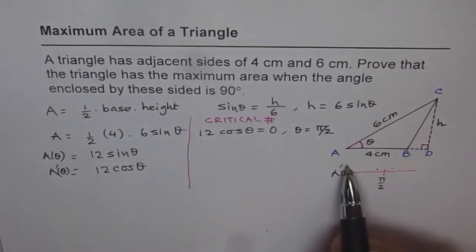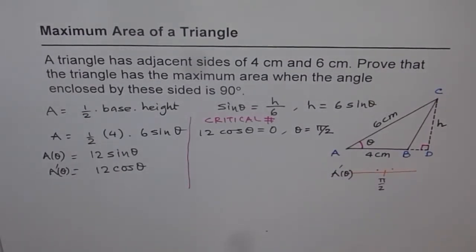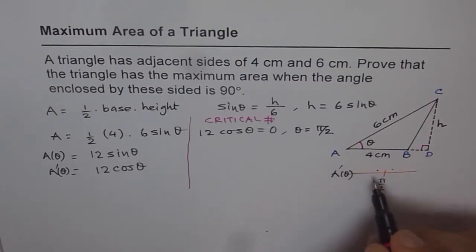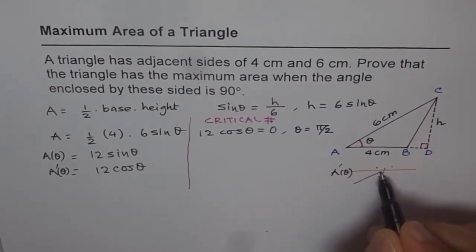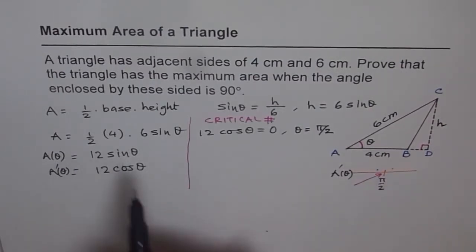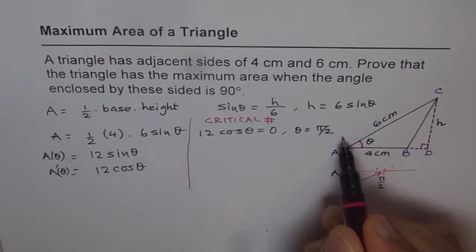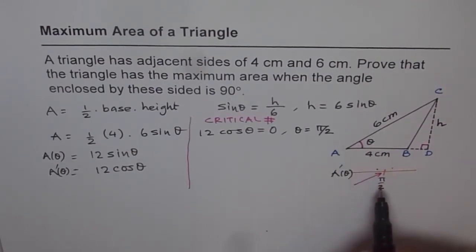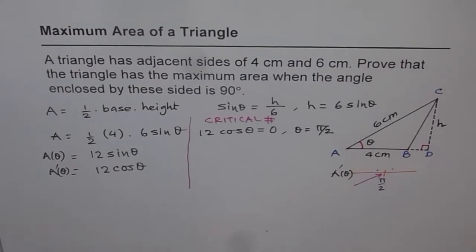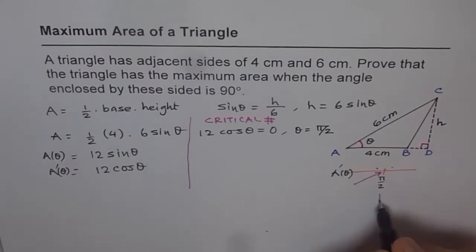So therefore A dash theta will be positive and since it is positive, the area will be increasing as this angle is increasing. But immediately after pi by 2 what happens? At pi by 2, A dash theta is 0 but after pi by 2 you are in quadrant 2. In quadrant 2, let me give you a picture there also we are talking about.